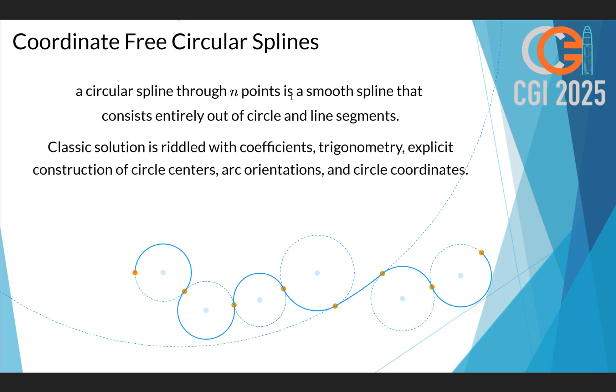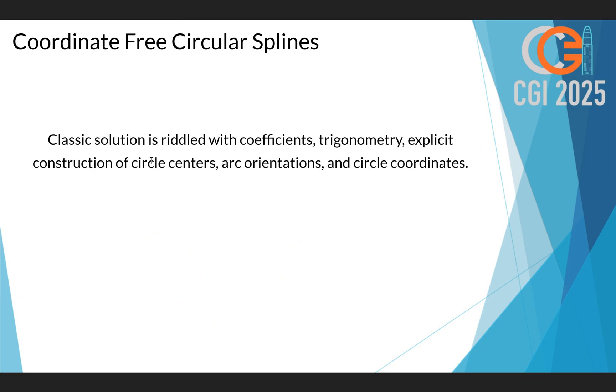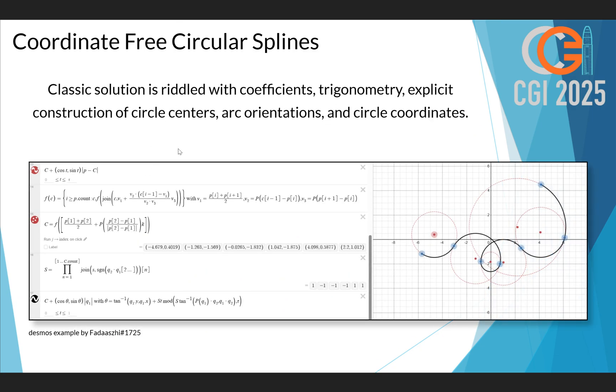So it's riddled with coefficients, you have to explicitly find circle centers, arc orientations, circle coordinates, and so on. Of course that's not how we're going to do it, but I did look up a simple example on Desmos that does this. This one is by Fadashi1725.